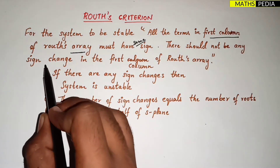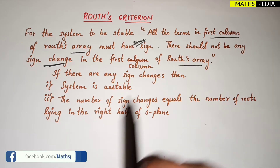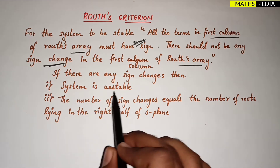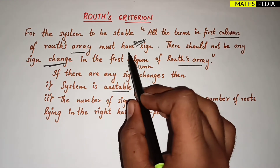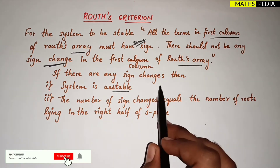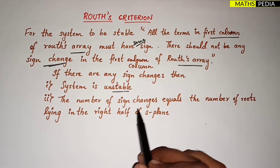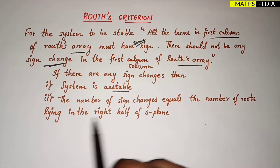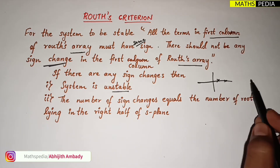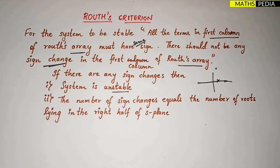If there is any sign change then the system is unstable. If there is no sign change then the system is stable. One more important point: the number of sign changes equals the number of roots lying in the right half of the s-plane.